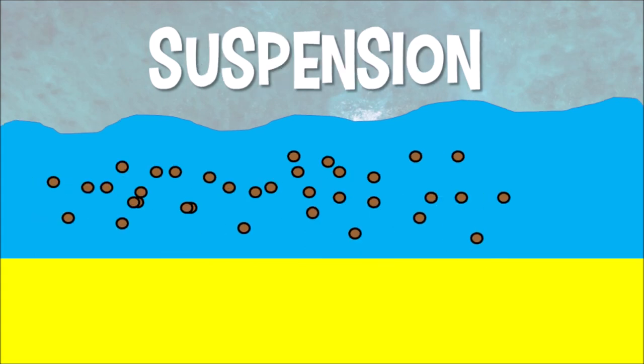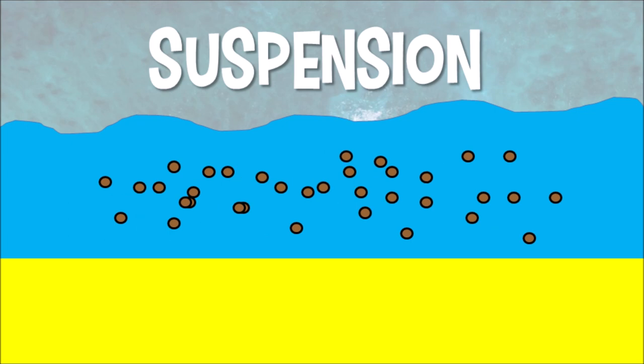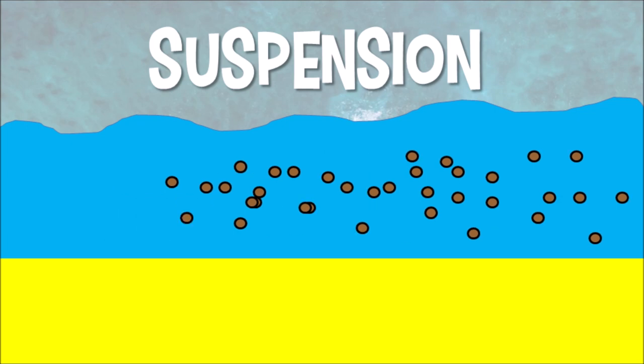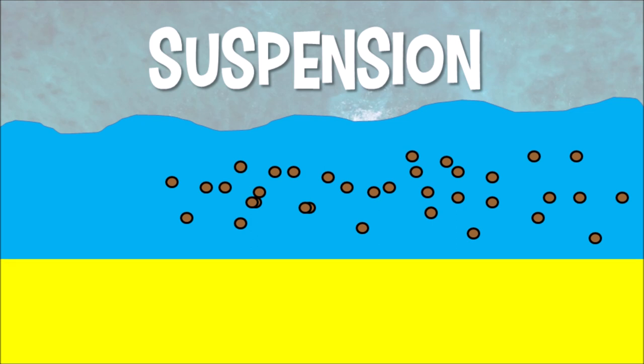Then we've got really fine pieces of sediment, like sand, and these are small enough to float in our seas and oceans. So they will be carried by the water, and this is known as suspension. Then we've actually got sediment that's dissolved into the water that we can't actually see, but it might turn the water a slightly different colour. We call this solution, and this is where anything that's been dissolved into the water will be carried along by the waves.